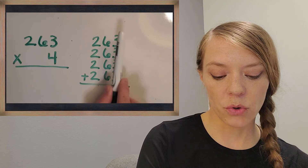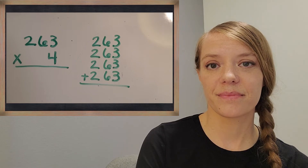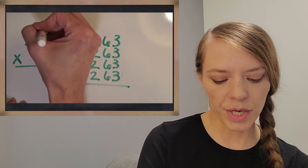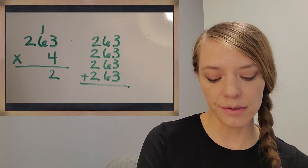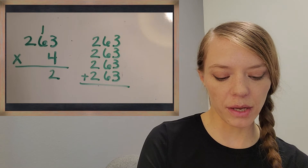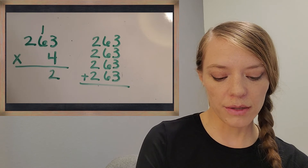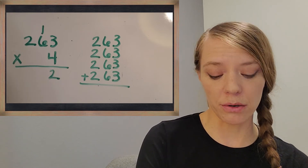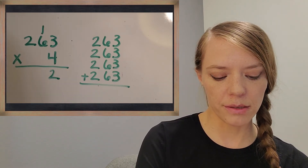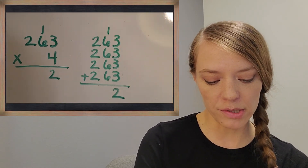Three times four — you got it, 12. I'm going to write it down and regroup the one over with the tens. Looking at the repeated addition, I see four groups of three, which reminds me of four times three. Counting: three, six, nine, twelve — same thing. And the regrouping looks the same too. Great.